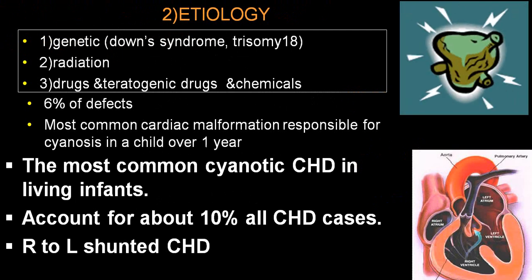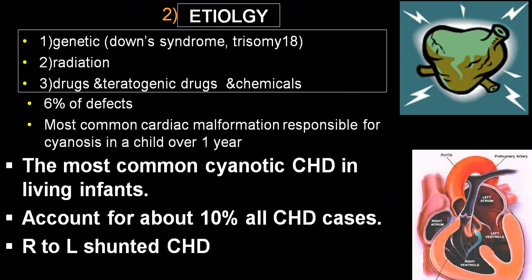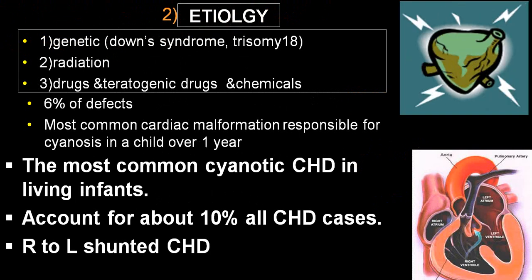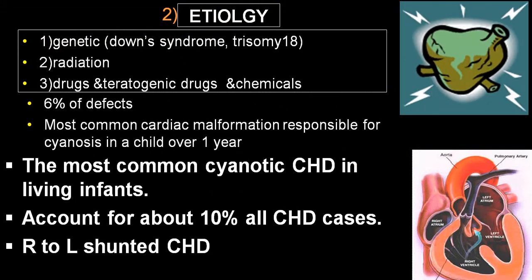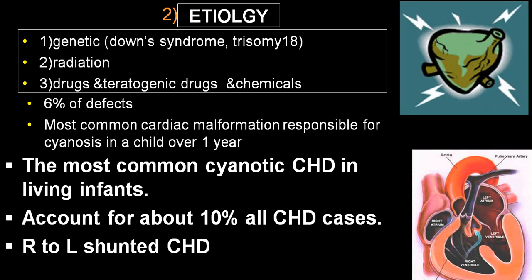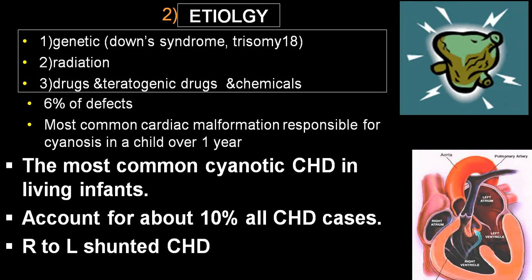Etiology-wise, the most common cause is genetic — Down syndrome or trisomy 18. Another group includes radiation, teratogenic drugs, and chemicals. Tetralogy of Fallot accounts for approximately nine percent of congenital heart disease and is the most common cyanotic congenital heart disease.